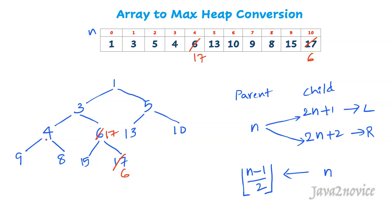Let's move to the next node. 4 is the node at index 3. Since 4 is the smallest compared to its children, let's heapify. 9 is the highest, so we swap: 9 goes up and 4 goes down. We apply this at the array level as well. Since 4 is now at a leaf node, no further heapification is required.